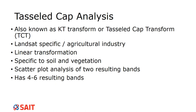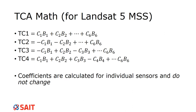It does use scatter plots, and the first two resulting bands are really what we look at — there are four to six resulting bands depending on which Landsat you are using. Old Landsat data has only four resulting bands, but newer Landsat data has six resulting bands.